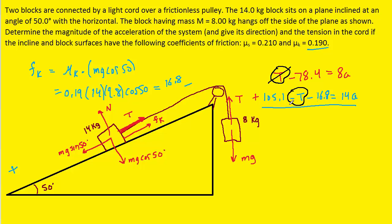And then we can go ahead and add the 105.1 to the negative 78.4 and the negative 16.8. And when we do that we get about 9.945. And then we add the right hand side too to get 22a.